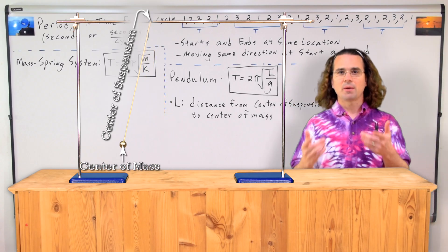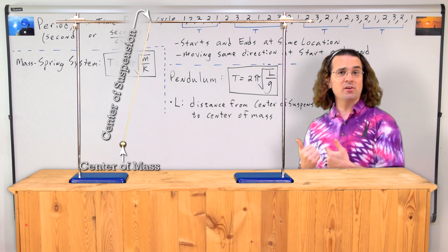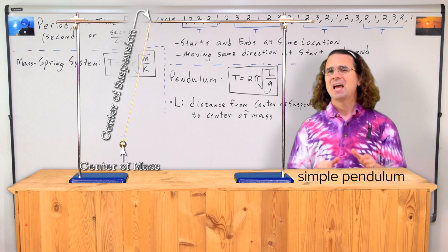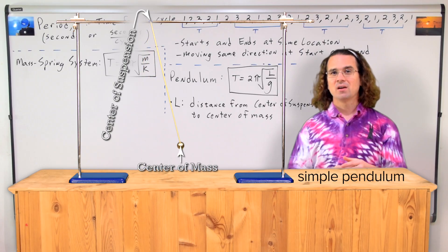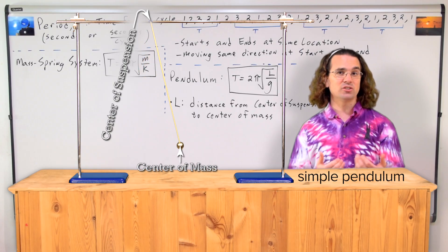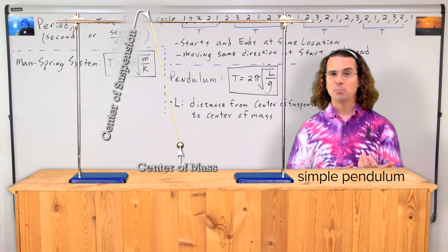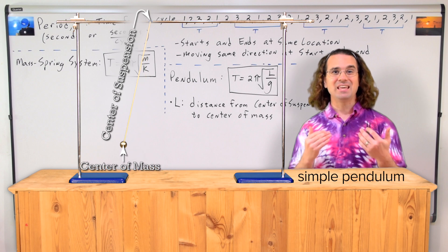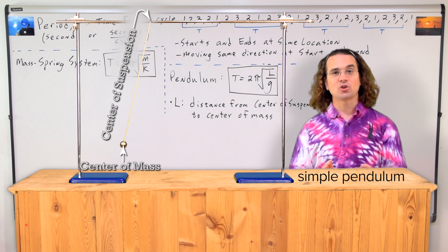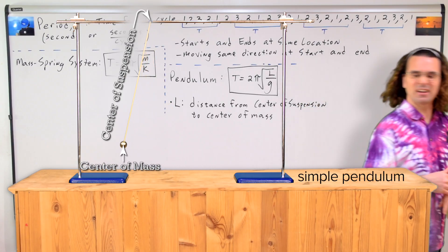Hi, I'm sorry, I need to come in for a minute. I need to mention that this period equation is for a simple pendulum specifically. A simple pendulum is where there is a point mass attached to a string or rod of negligible mass. In other words, all of the mass of the simple pendulum is concentrated at the end of the pendulum at its center of mass. Again, this is called a simple pendulum. Okay, you can get back to that.